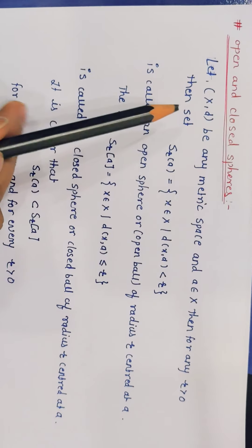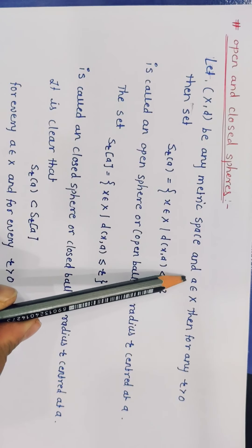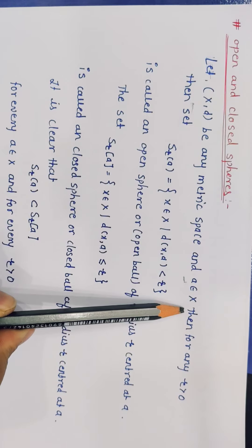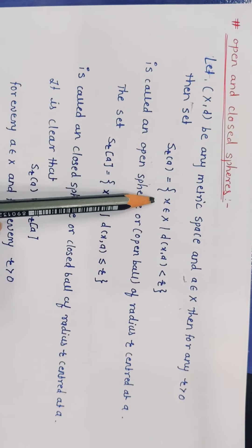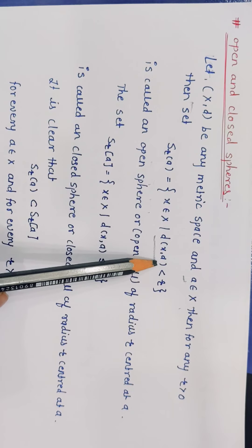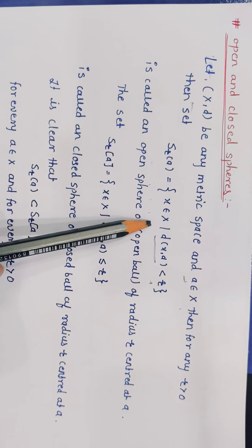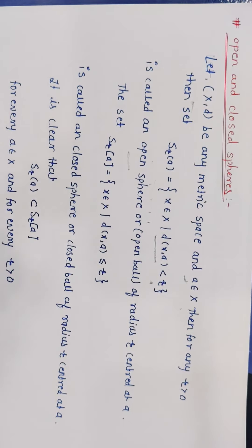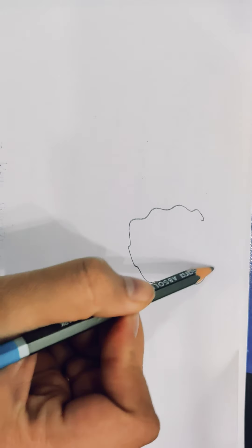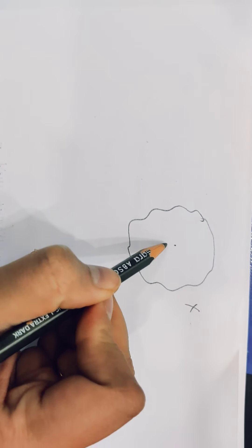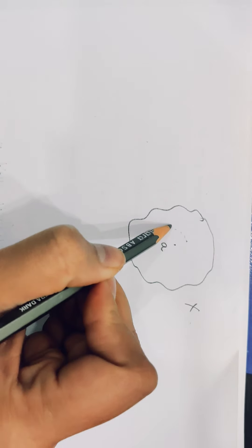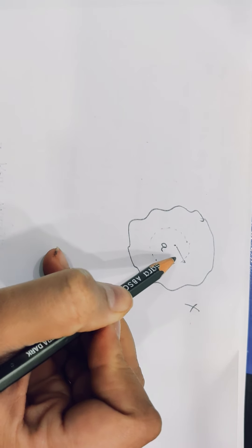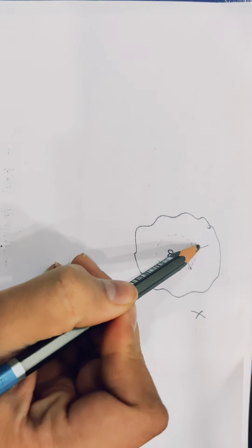Open sphere ka matlab kya hota hai — suppose koi metric space liya humne (X, d), aur wahan ka ek point liya a ∈ X. Then for any r > 0, S_r(a) is the set of all x ∈ X such that distance from point a to x should be less than r. Aise sare points ka collection karte hai uss set mein. Usko hum bolenge open sphere centered at a of radius r. Yah jo set hai, ismein jo sare points hai, woh open sphere mein aa jaayenge.